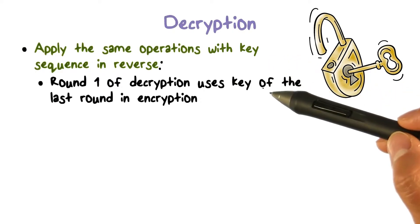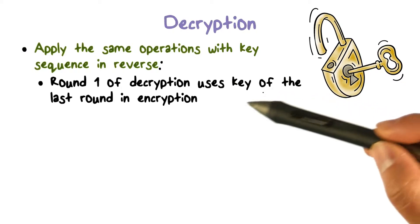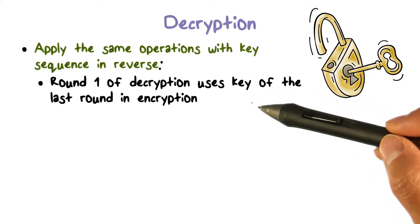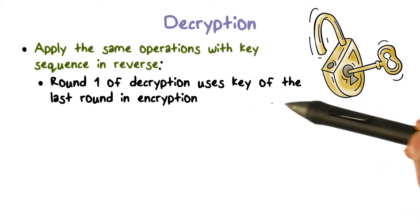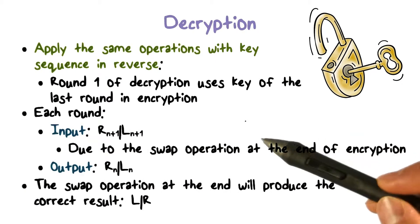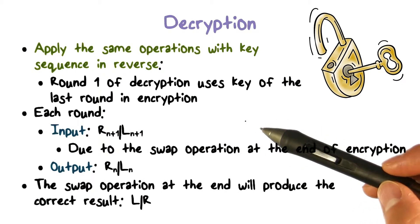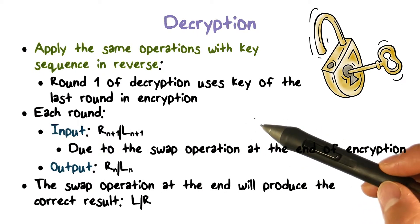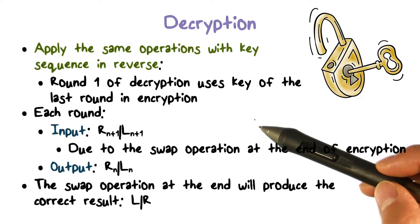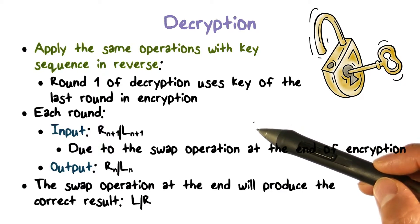That is, round one of decryption uses the key of the last round of encryption, and so on and so forth. We can take a closer look to verify that decryption really works by applying the same operations as in encryption, and only the key sequence in reverse.